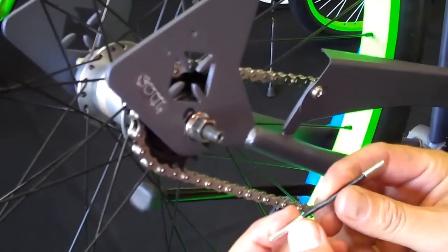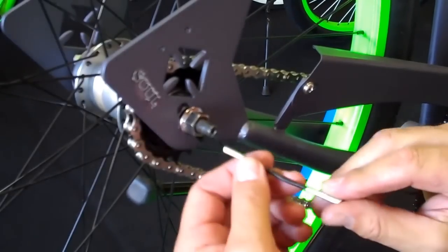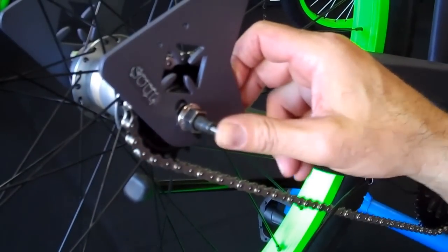From here, take the provided pin. There's going to be one side that's beveled and one side that's not. Take the non-beveled side and slide it right into the center of your axle and press it in.